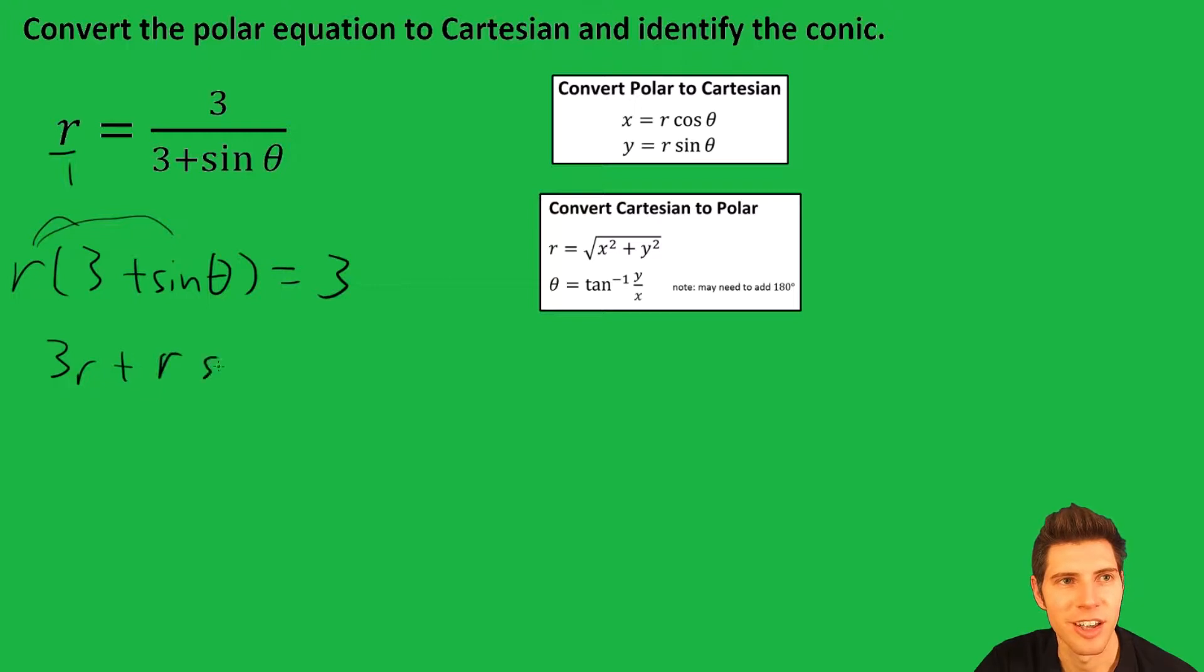Now I can substitute r sine theta, if you look up here, is y. So I can change that into a y. And then r, if you look right here, is the square root of x squared plus y squared. So we can write this as 3 times the square root of x squared plus y squared plus y equals 3.